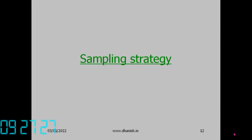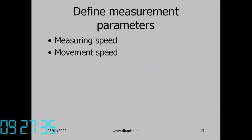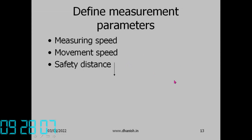Measurement parameters: measuring speed is the slow speed at which the probe contacts the workpiece; movement speed is the fast speed for traveling between points, similar to rapid travel in CNC machines; safety distance is the distance from the surface at which the machine switches from movement speed to measuring speed.